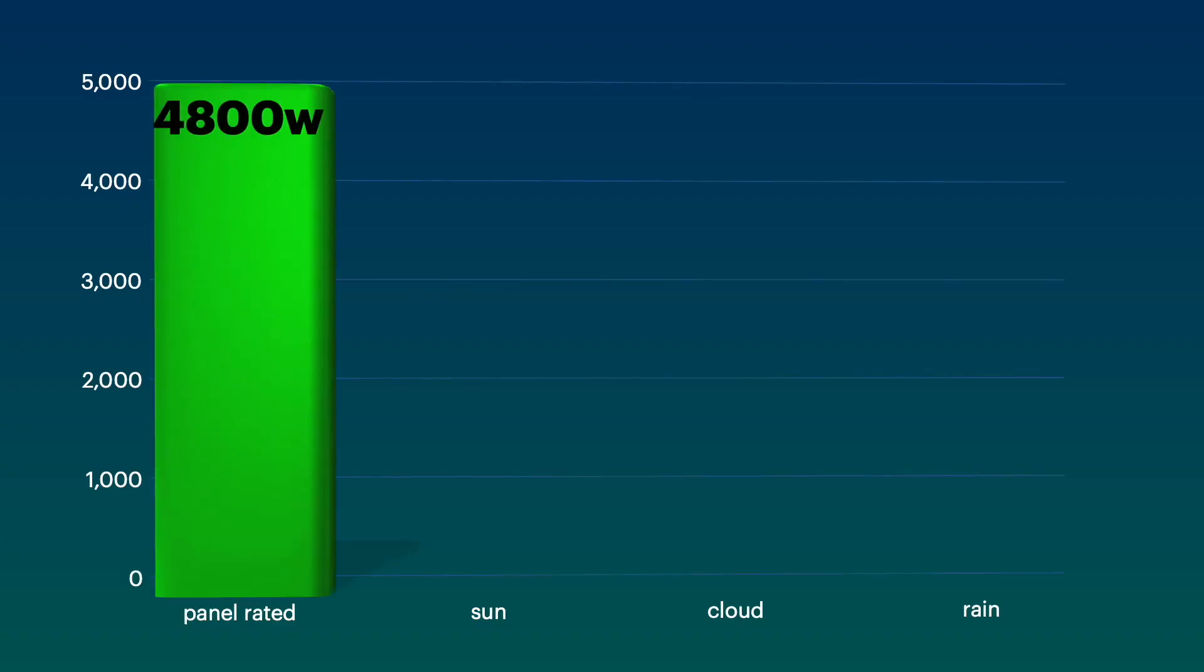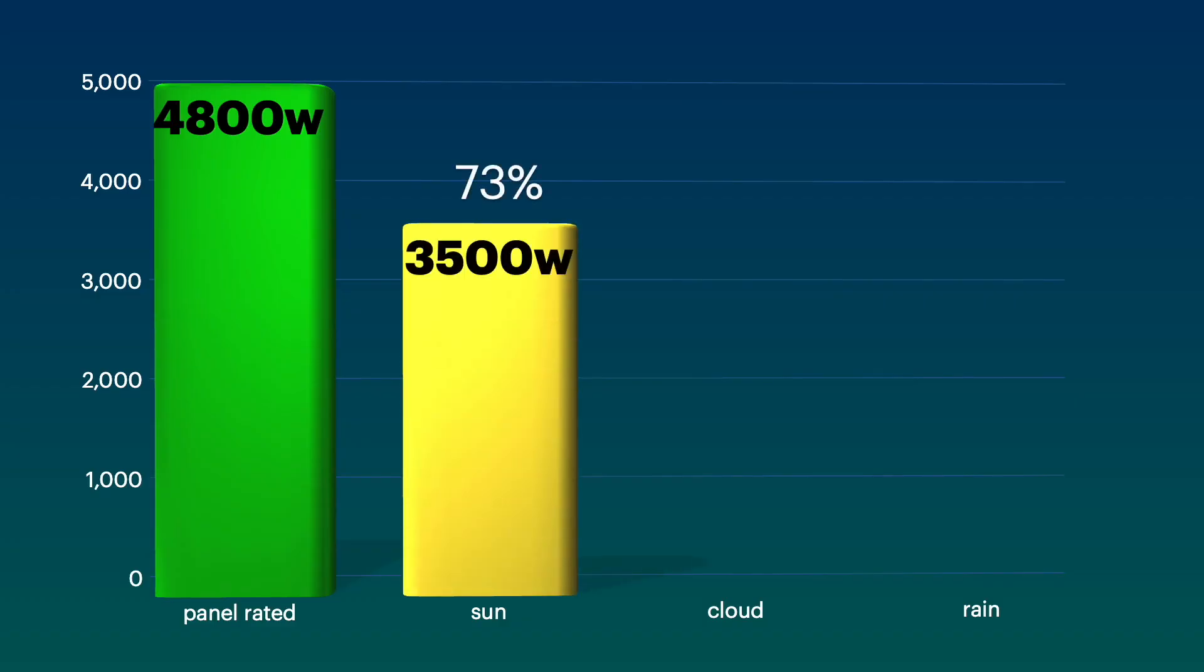So, in comparison, again, we had 4,800 watts of rated wattage on the panels. We actually get about 3,500 watts on a good sunny day. So, on a cloudy day, it can vary from as little as 800 watts, which is only 17% of the rated 4,800 watts, and it can go up to 2,000 or so, around 40% of the rated value.